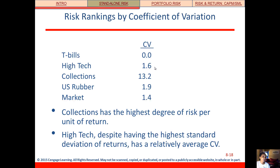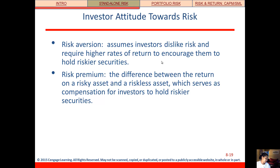Now this is where our choices fall out. We want the lowest risk per unit of return. Of the three risky securities — high-tech, collections, and US rubber — we would want to invest in high-tech. Collections actually has the highest degree of risk per unit of return, and high-tech has the lowest, not counting the market. We should also think about investors' attitude toward risk: most of us are risk-averse, meaning we prefer the least amount of risk for a given return because we dislike risk and require a higher return to invest in riskier securities. A risk premium is what compensates us for holding those riskier securities.